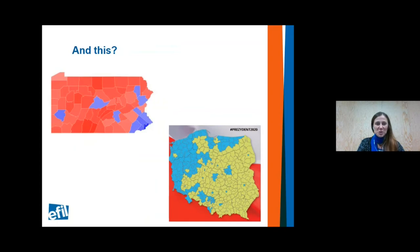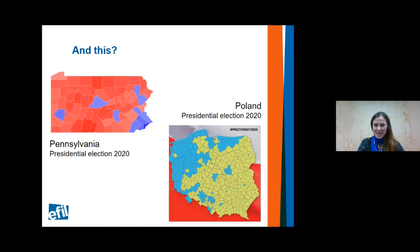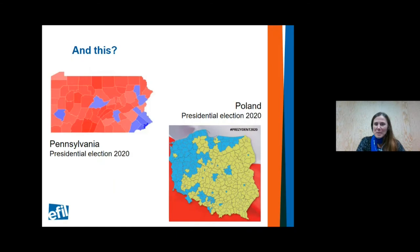Here are two maps of something also quite recent. The first is the results of the presidential election in the US in Pennsylvania, and the second is the results of the presidential election in Poland a few months ago. There is a lot in common between these two maps — a huge divide that is not only regional but also between rural and urban populations. Why am I showing these maps, and what does it have to do with intercultural learning?